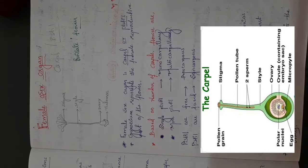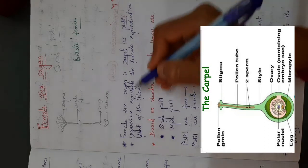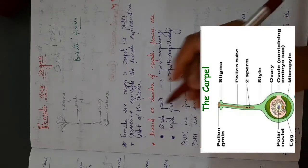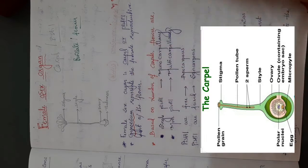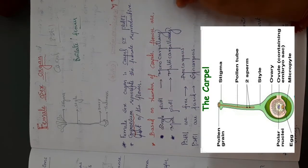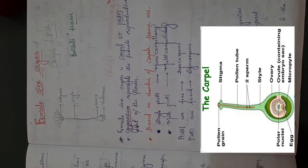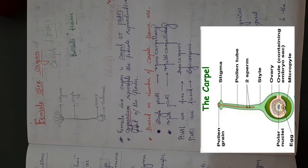The gynoecium represents the female reproductive part of the flower — that is the female sex organ, the carpel. The number of carpels varies from species to species. A group of carpels is called as a gynoecium, and the number of carpels depends on the species.